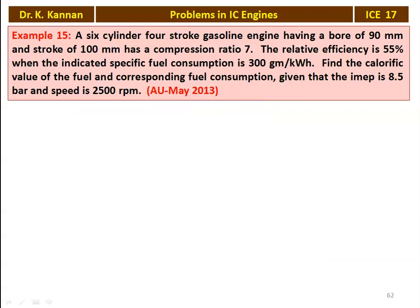We take example number 15 from the May 2013 question paper. A 6-cylinder 4-stroke gasoline engine having a bore of 90 millimeter and stroke length of 100 millimeter has a compression ratio of 7. Relative efficiency is 55 percentage when the indicated specific fuel consumption is 300 grams per kilowatt hour. Find the calorific value of the fuel and the corresponding fuel consumption, given that the IMEP is 8.5 bar and the speed equals 2500 RPM.